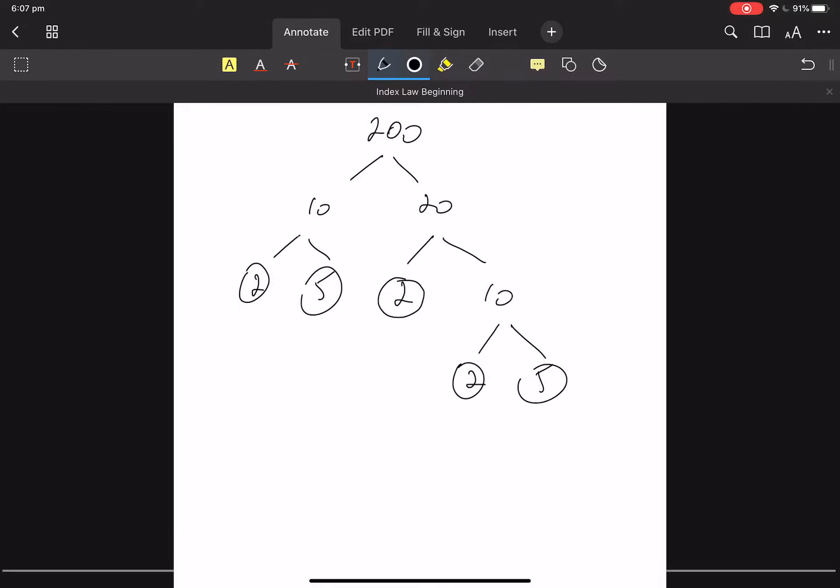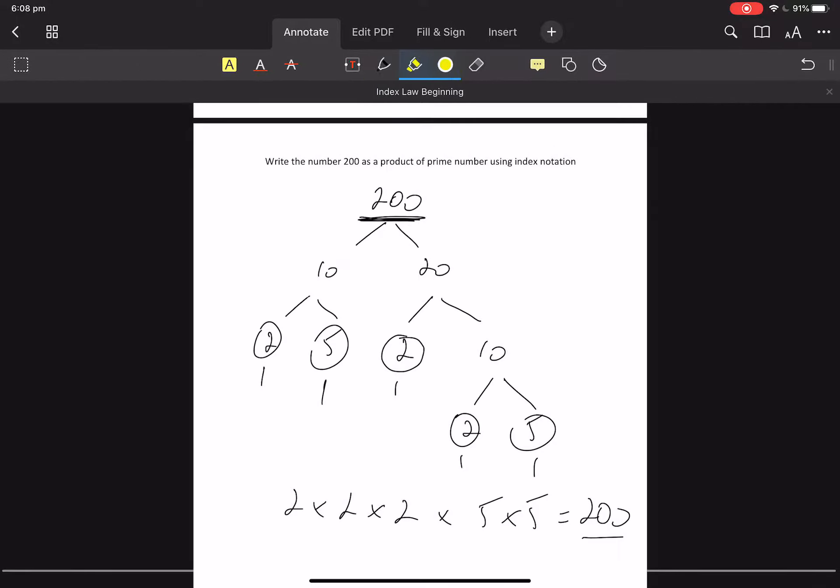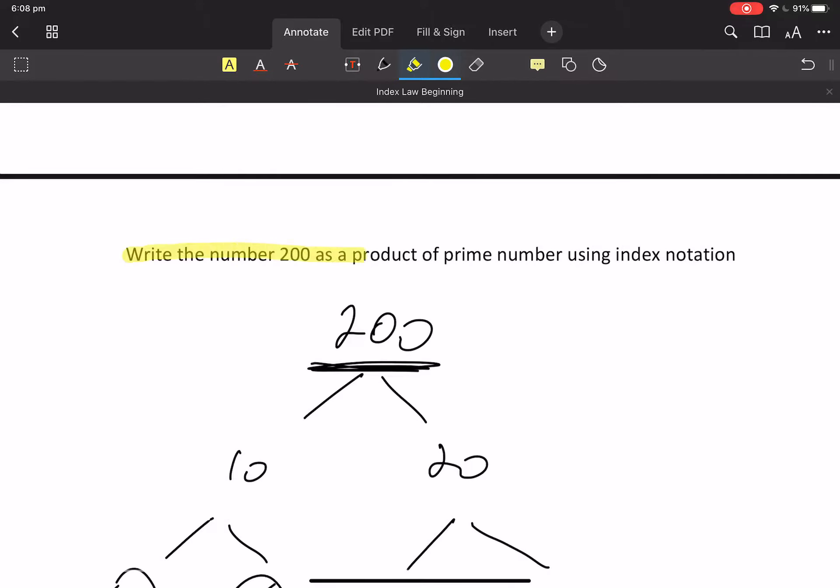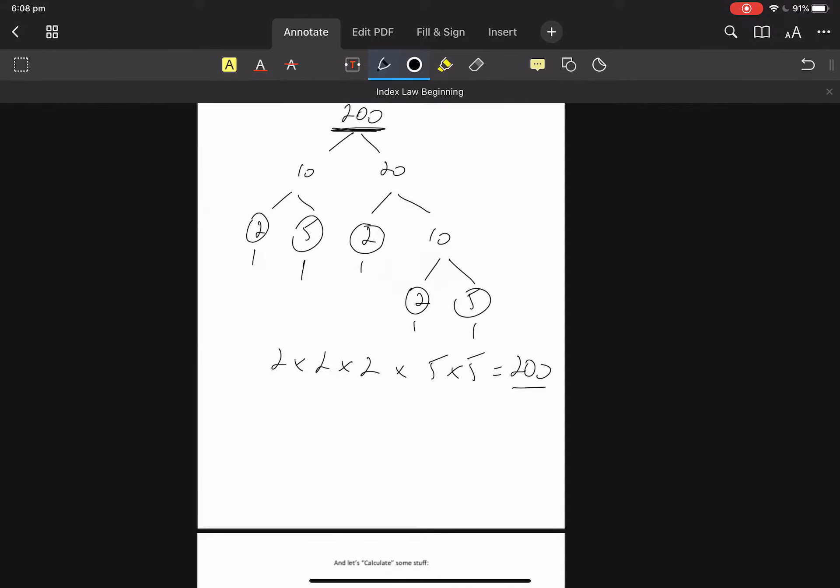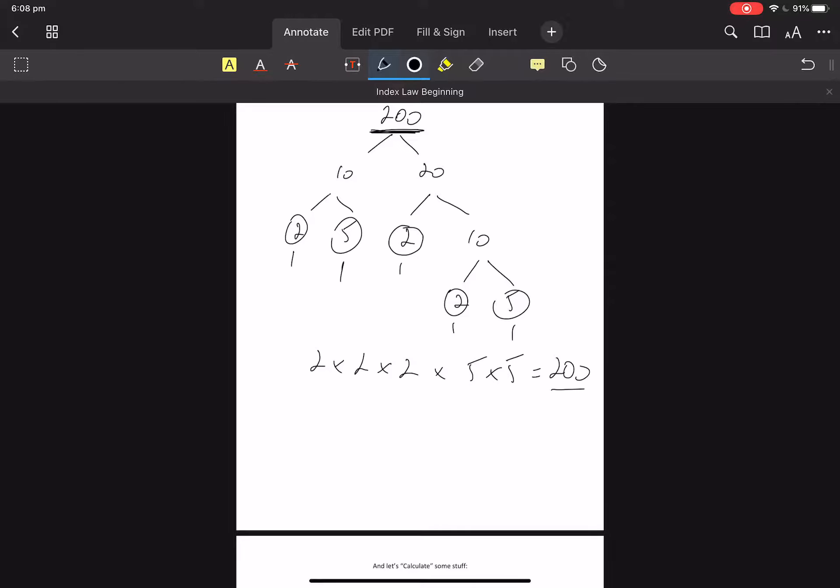So we can write the number 200 as how many 2s have we got? 1, 2, 2 times 2 times 2, and then there are two 5s. And if we multiply them out, 2 times 2 times 2 times 5 times 5, we're going to get 200. We can look very carefully at our instruction. Write the number 200 as a product of prime numbers using index notation. So we're not finished. That is just a product of prime numbers, but we can write that 200 as a product of prime numbers with index notation. There are three 2s, and there are two 5s. Away we go. Done.